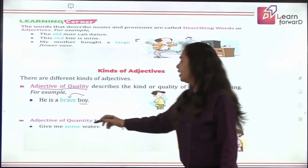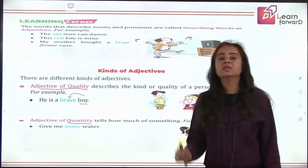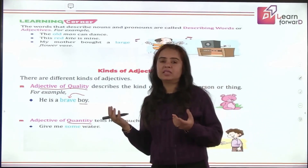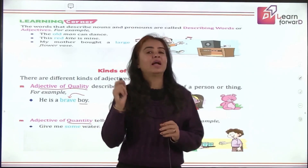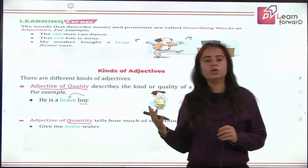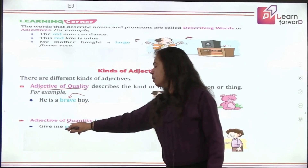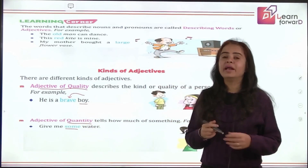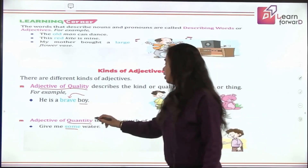Going ahead, we have adjective of quantity. Quantity means something that we cannot count. For example, if I say 'I want some milk,' can I count milk? No. So 'some' is telling about milk — how much quantity do I need. That is the adjective of quantity. 'Give me some water' — again, I cannot count water, so that is also adjective of quantity.